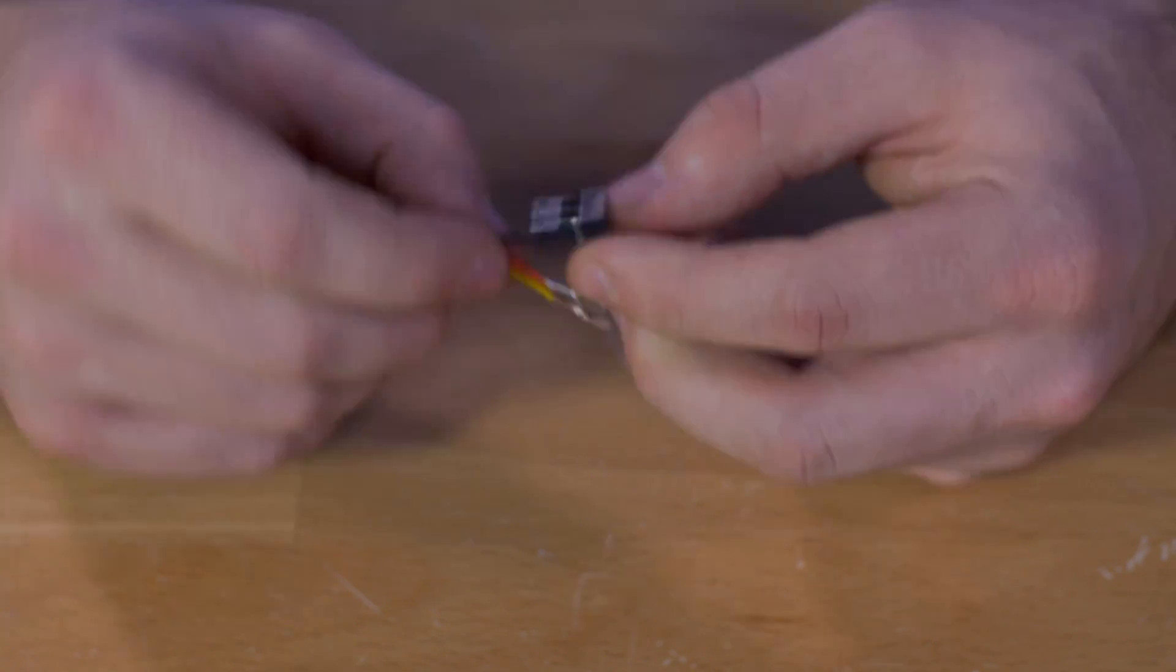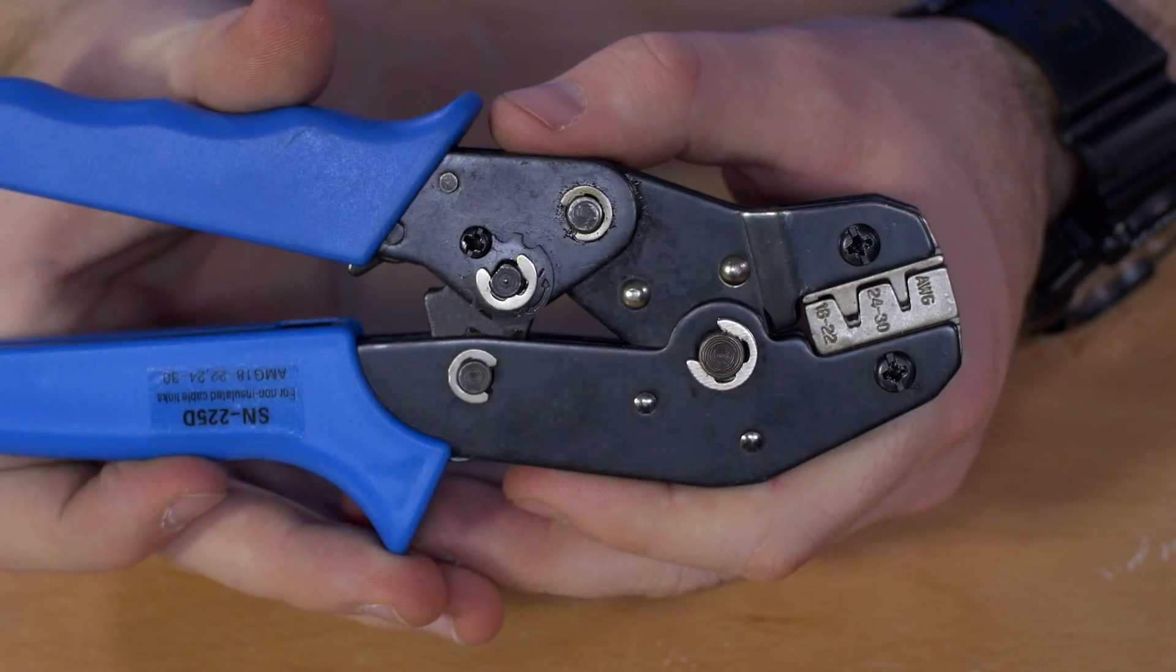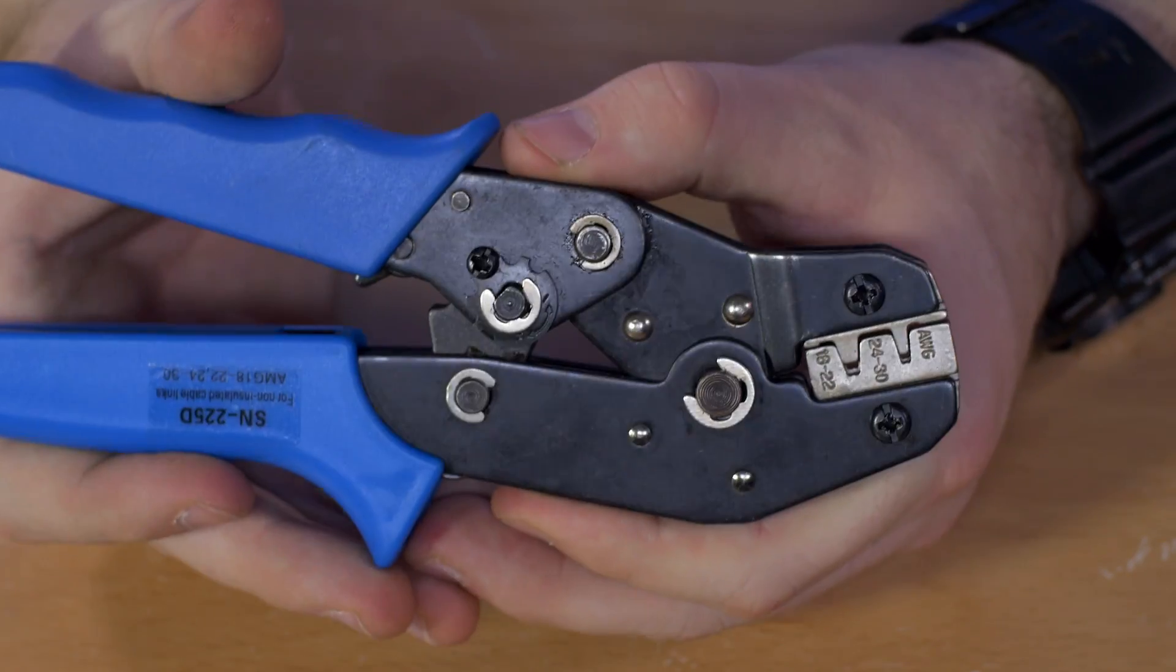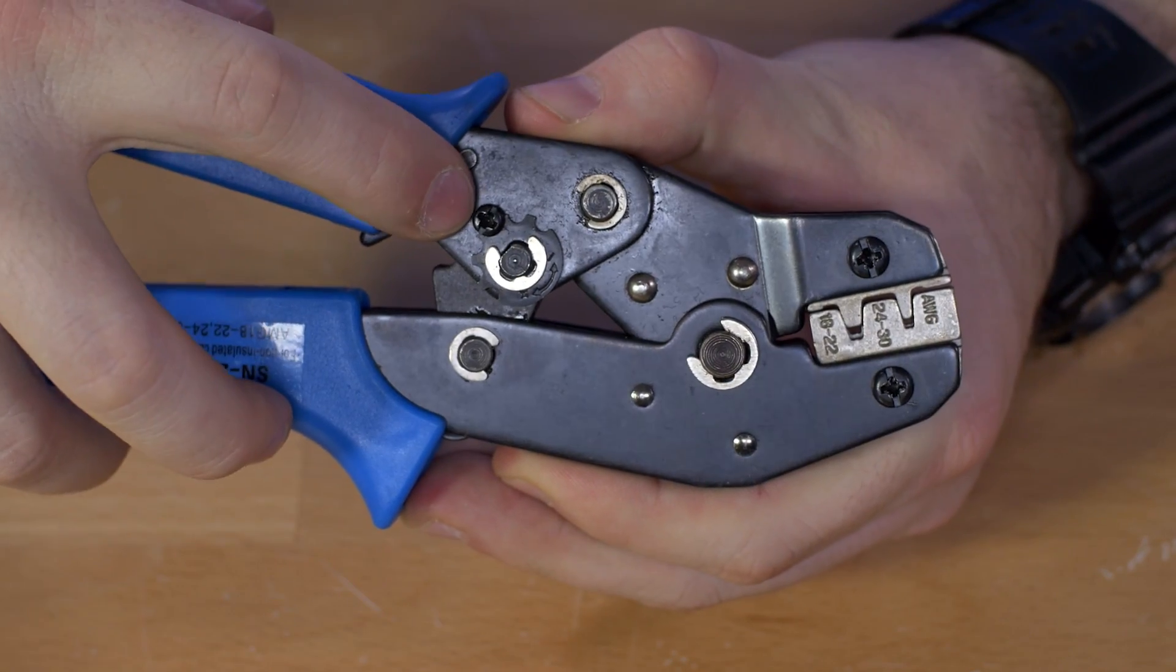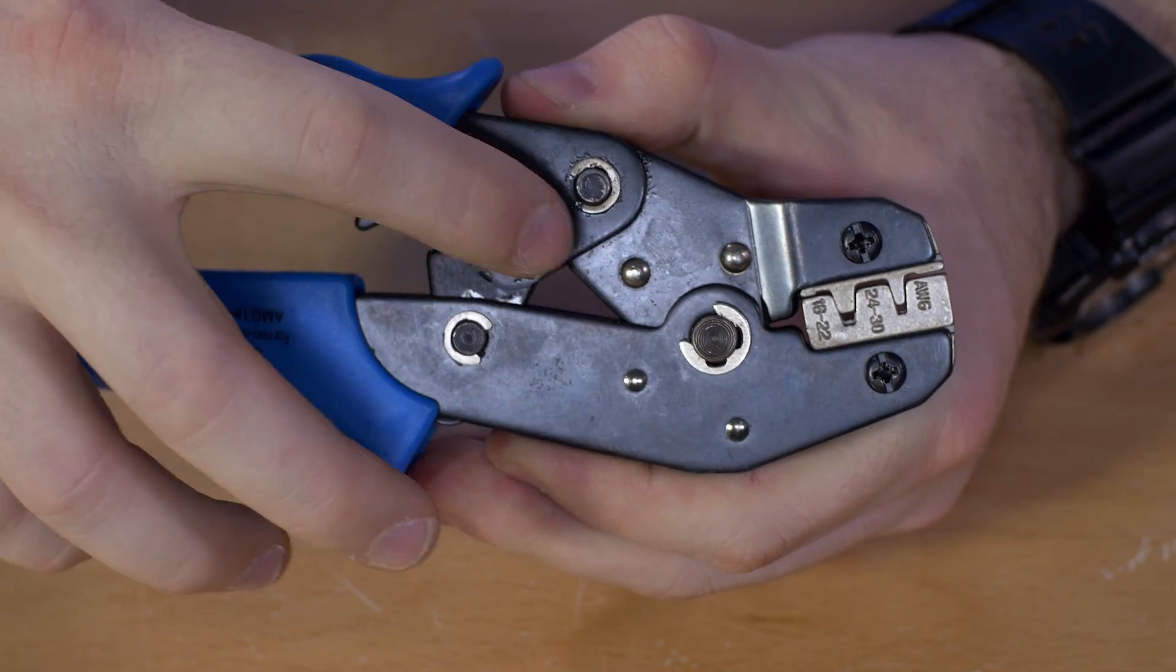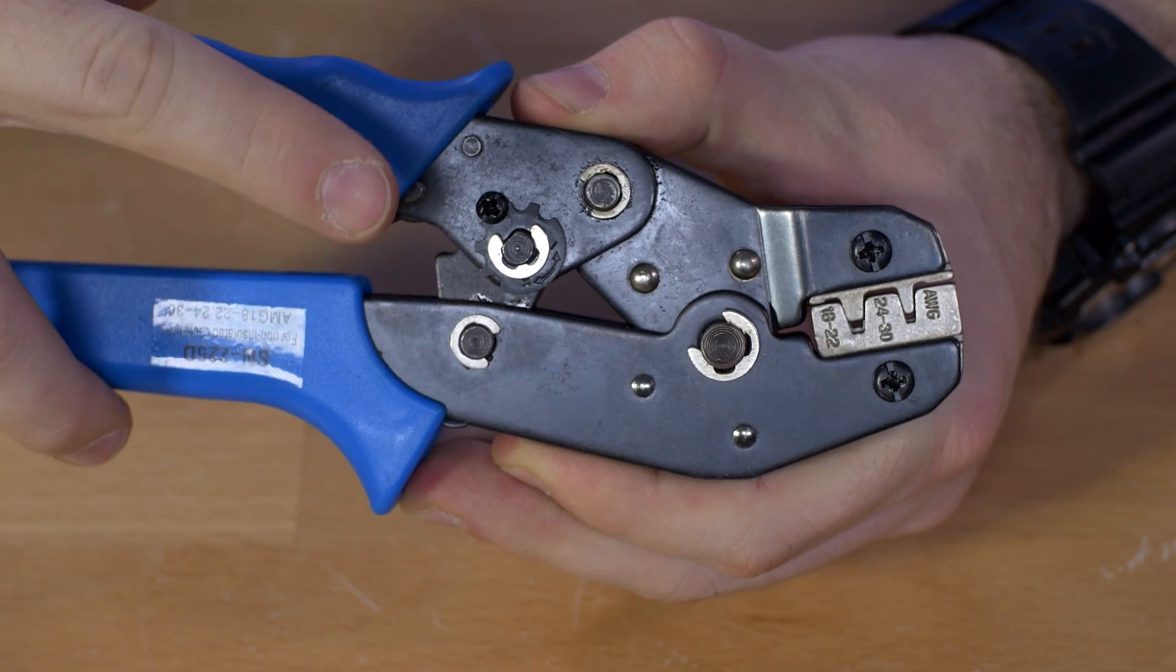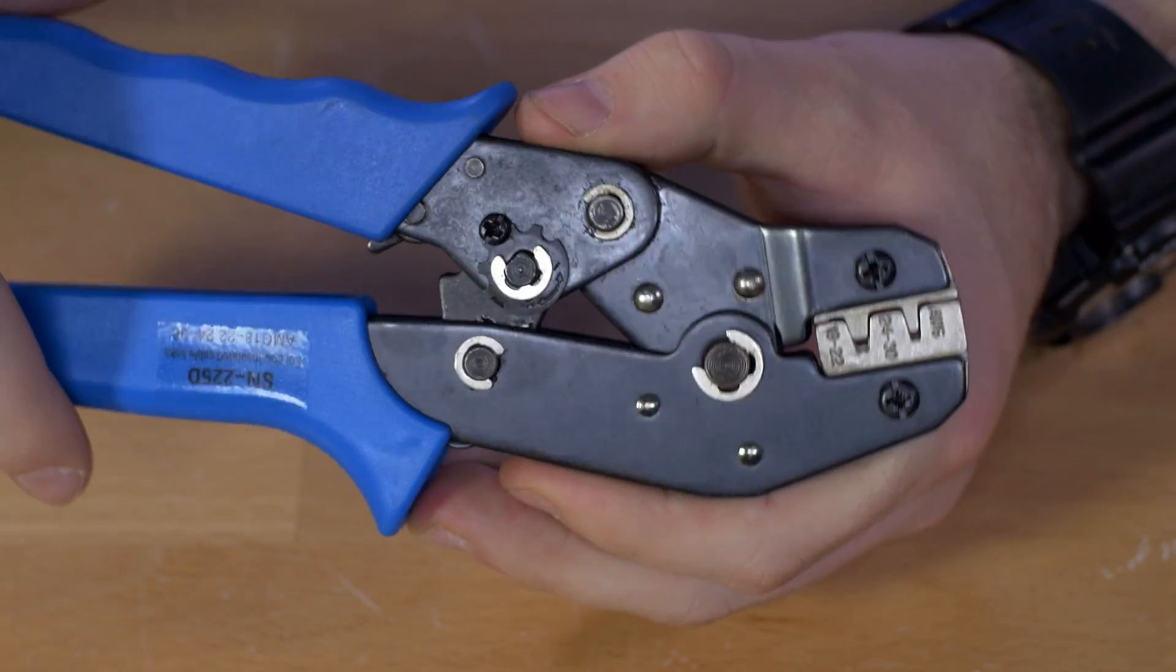As a final note, the pin crimpers do have a tension adjustment and that's right here. You can remove this Phillips head screw and twist the adjustment either plus or minus to increase or decrease the tension.